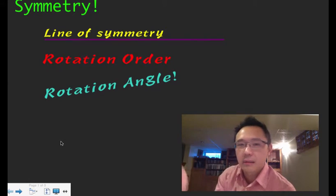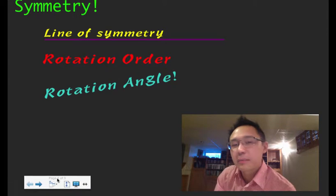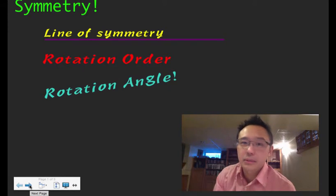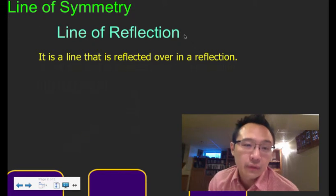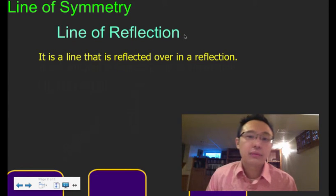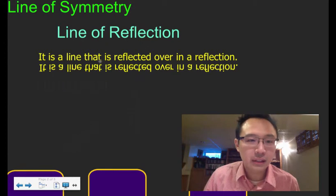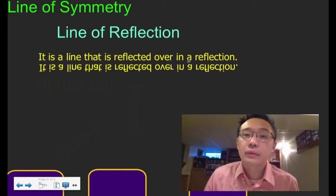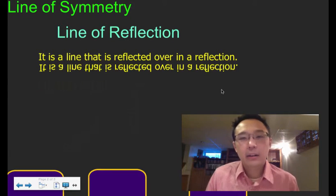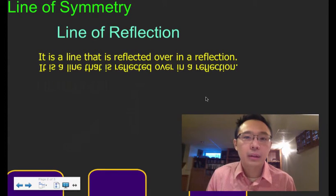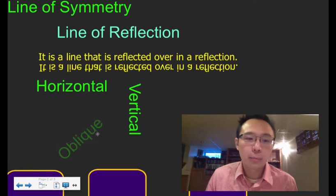In biology, architecture, and animals, things are often symmetrical because it makes sense. The line of symmetry — another word for it is the line of reflection. The simple concept is a line that splits a shape in half, where one side is reflected onto the other. There are three essential lines of symmetry: horizontal (left to right), vertical (up and down), and oblique, which is any diagonal line.